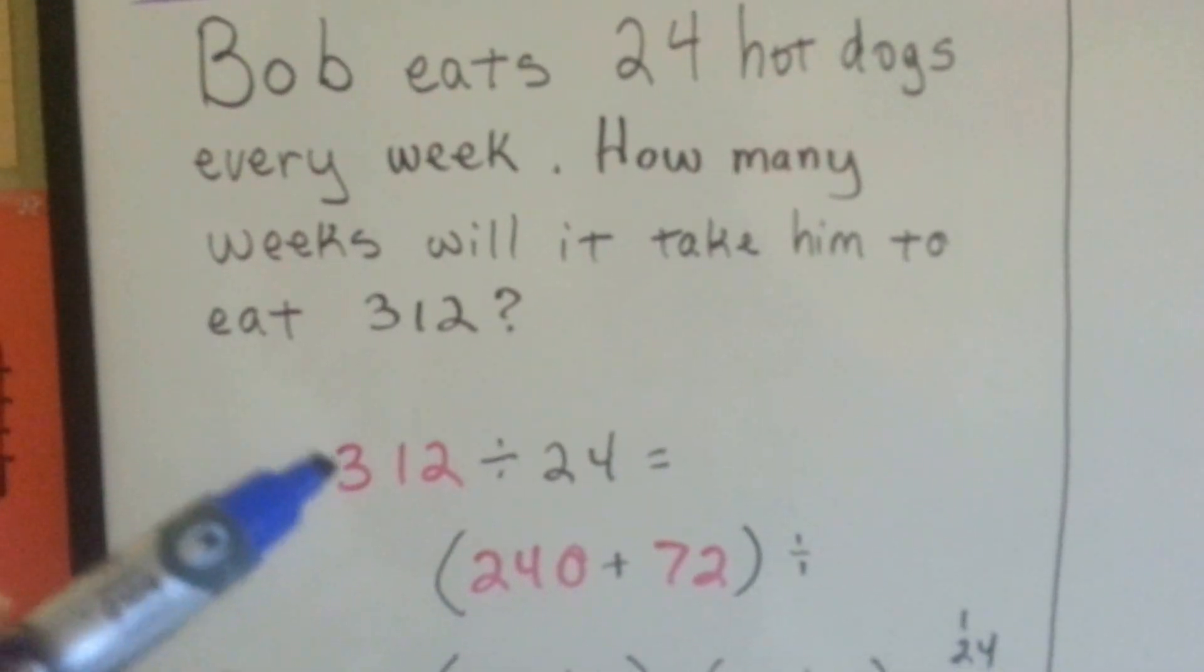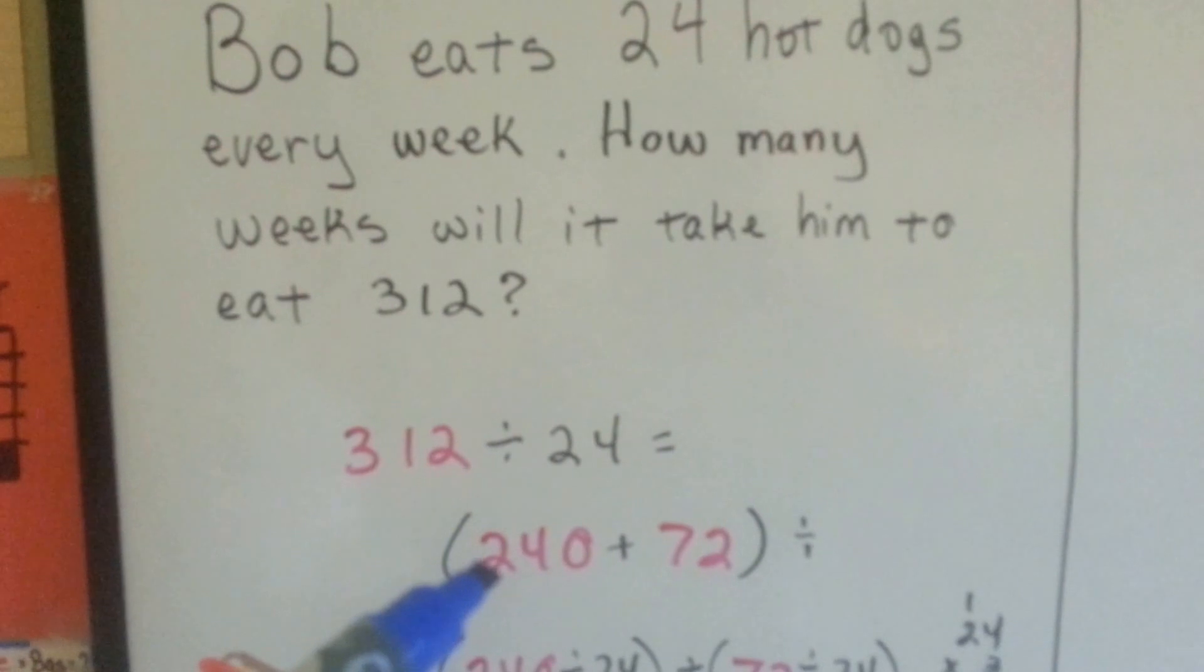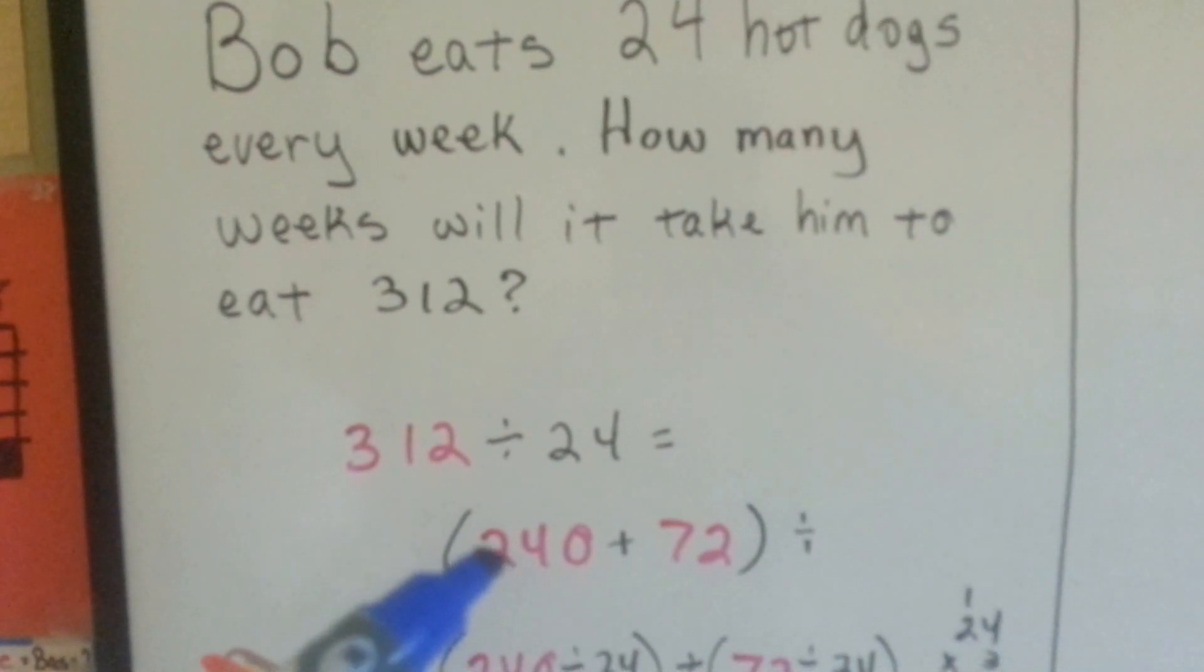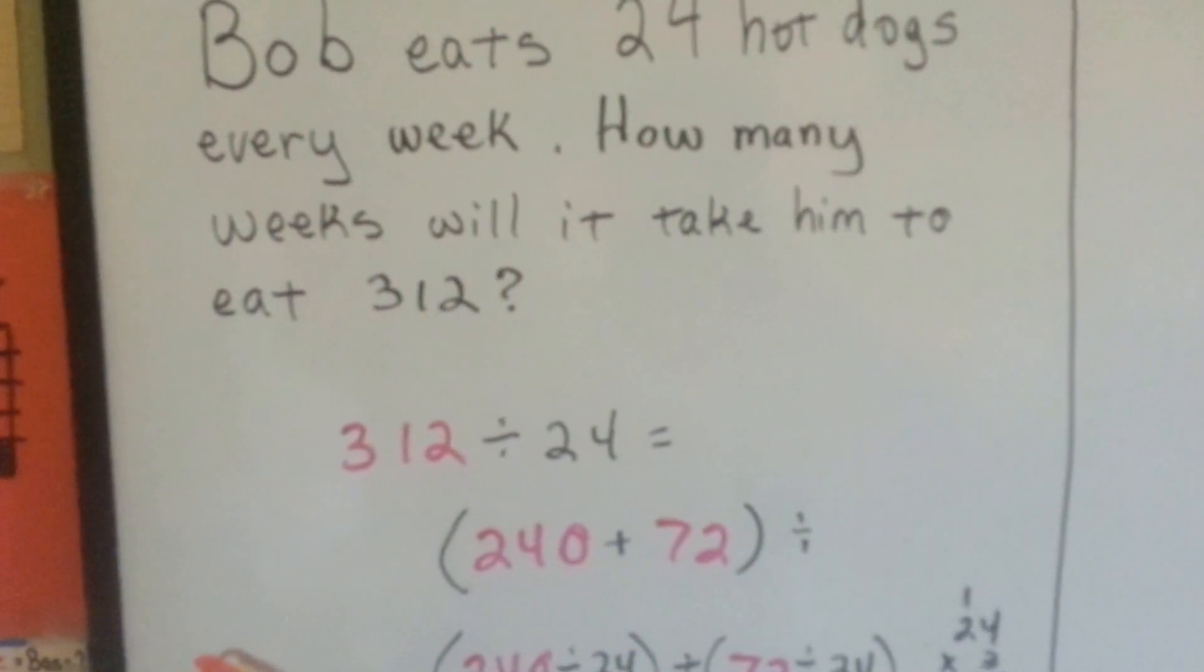So we can split the 312 into easier parts. I know that 24 times 10 is 240. And I take the 240 from the 312 and it equals 72.